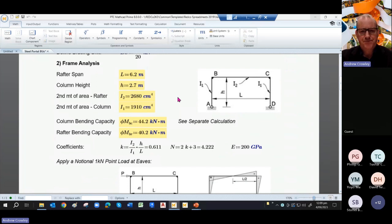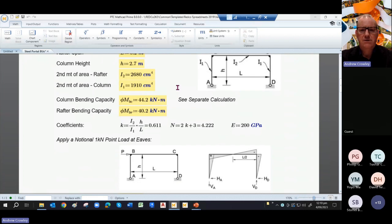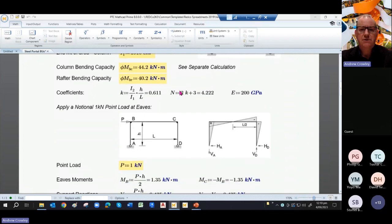So coming into the analysis, here is a typical portal frame that we use in a house. We have a rafter span. In this case, it's a flat rafter. Length 6.2 metres. Height 2.7 metres. We've done some calculations separately to find out what the capacity of this frame is. So here is our designed bending capacity for the column and the rafter. We've also picked up what the I values are for the rafter and column.